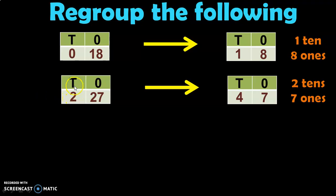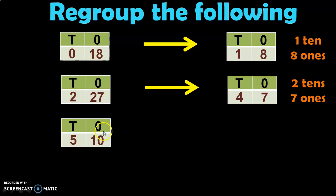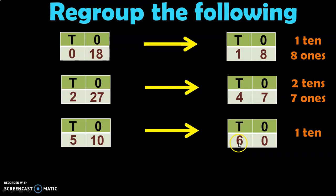Let us check: 2 Tens is 20 plus 27 Ones gives you 47. Next example: 5 Tens and 10 Ones. We know that 10 Ones is equal to 1 Ten. So that 1 Ten will be moved to the Tens place, giving you 6 Tens and 0 Ones, which makes 60. So 5 Tens and 10 Ones is 60, and when regrouped, you get 6 Tens and 0 Ones, also making 60.